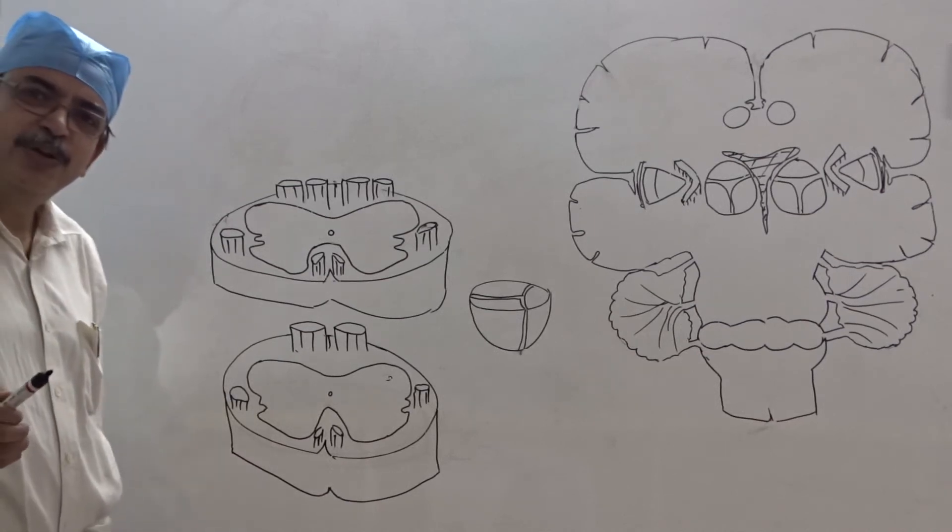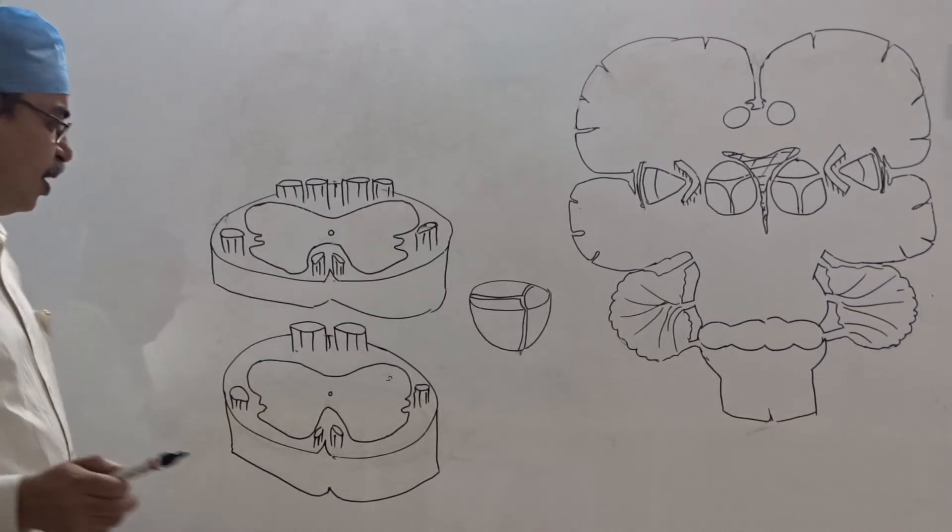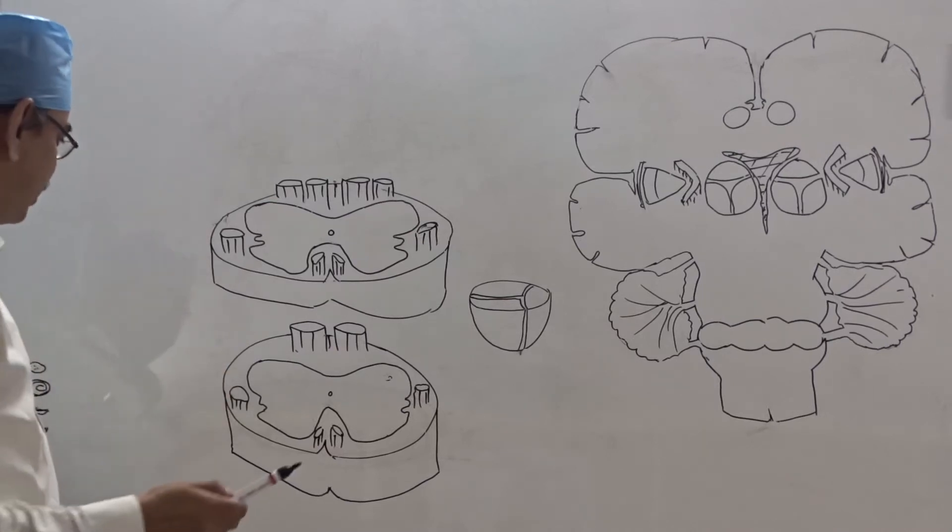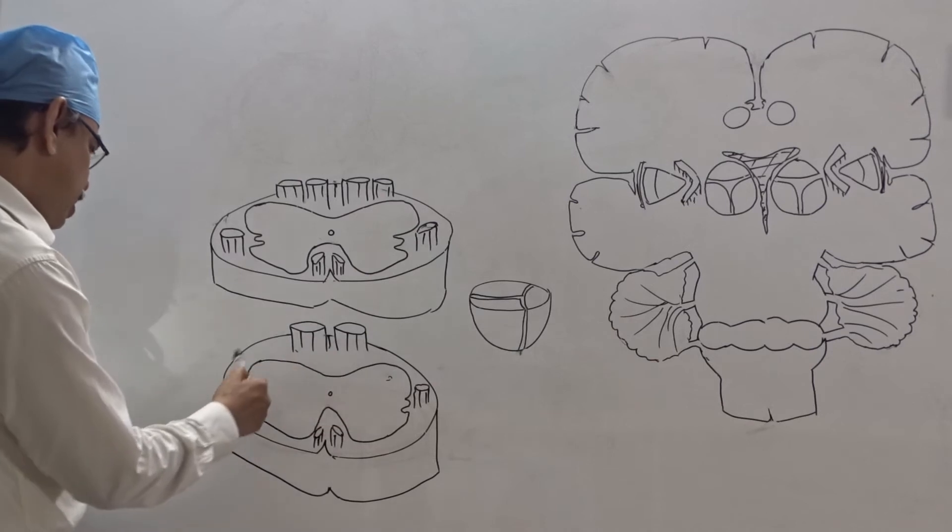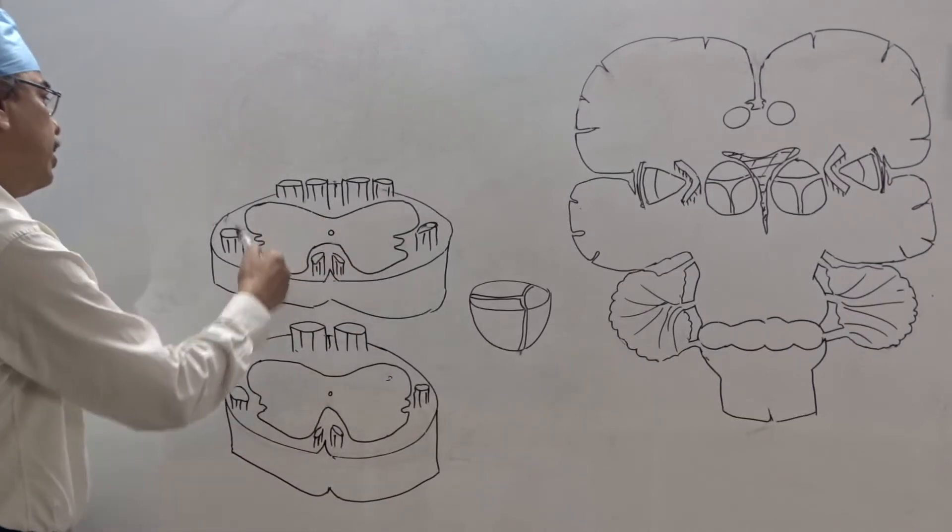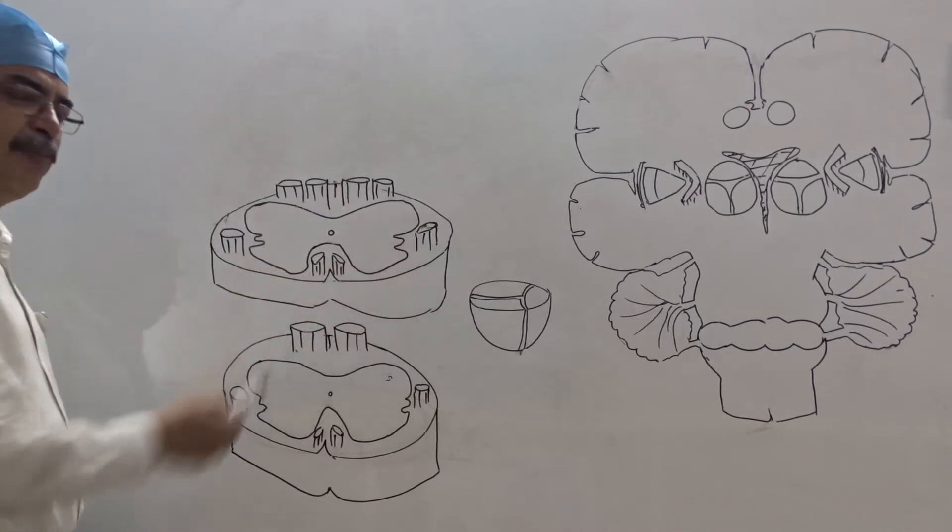Before we discuss the ascending pathway, this is the outline of the central nervous system. This is a cross-section of the spinal cord, and this is another cross-section of the spinal cord at the upper level.